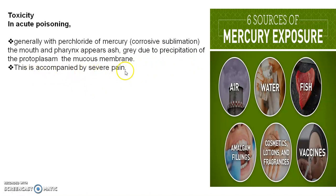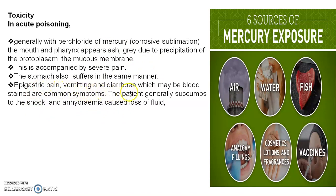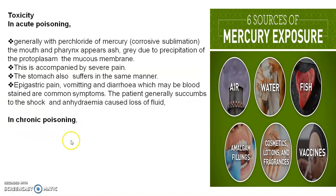Acute mercury poisoning is accompanied by severe pain in the throat. The stomach suffers in the same manner — severe epigastric pain, vomiting, diarrhea, and blood-stained stools are common symptoms. The patient generally succumbs to shock, and anuria causes loss of fluids.